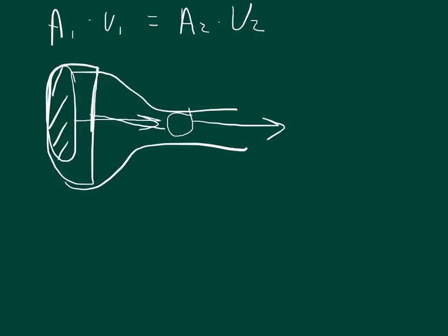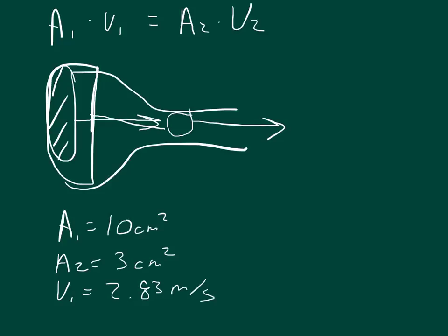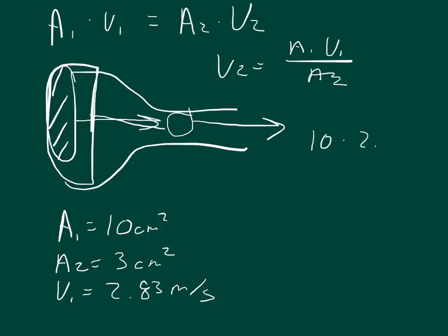We're going to calculate exactly what that's going to be. Area 1 is 10 square centimeters and Area 2 is 3 square centimeters. Velocity 1 is 283 centimeters per second, which I'll convert to 2.83 meters per second because the question wants the answer in meters per second. Solving for V2, we get V2 equals A1 times V1 divided by A2. Plugging in our numbers: 10 times 2.83 divided by 3.